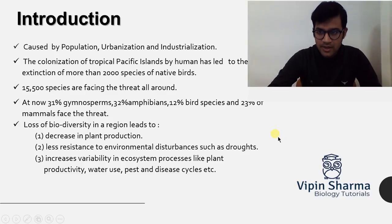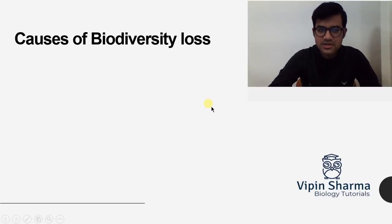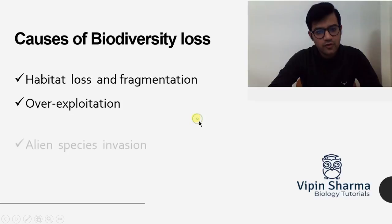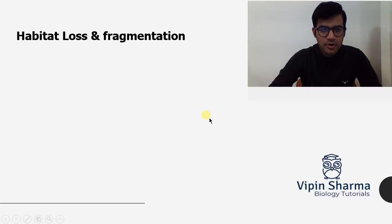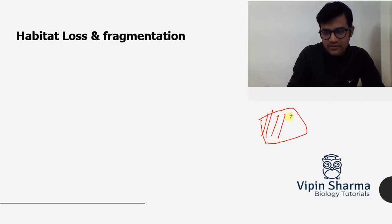Now let's go one by one through the major root causes of biodiversity losses. These are: habitat loss and fragmentation, over-exploitation, alien species invasion, and co-extinction.